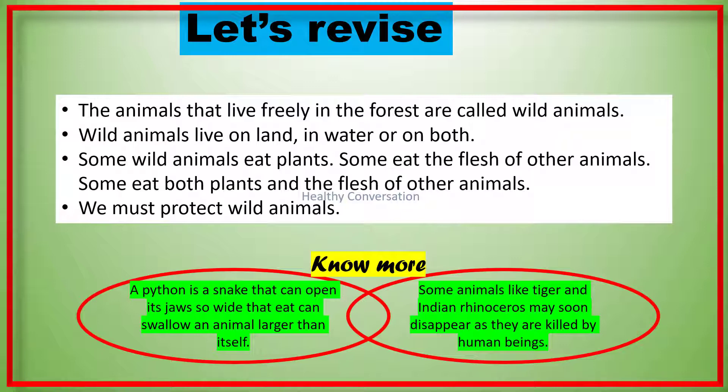Friends, now let's know more. A python is a snake that can open its jaws so wide that it can swallow an animal larger than itself. Some animals like tigers and Indian rhinoceros may soon disappear as they are killed by human beings.